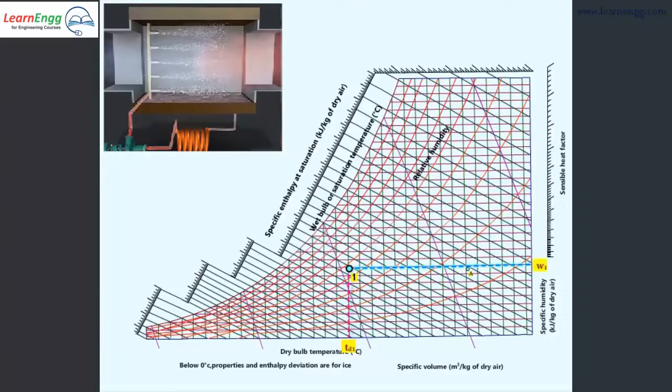This is shown by state 1. Now the state moves from 1 to a during the sensible heating process in the coil. The state of air then reaches final state 2 from a due to humidification.